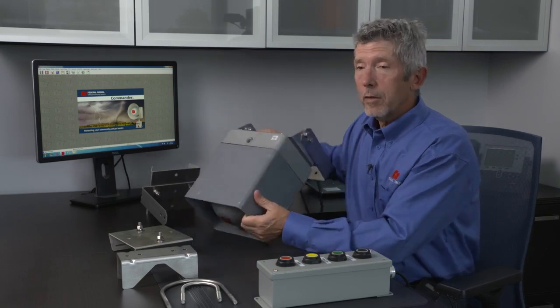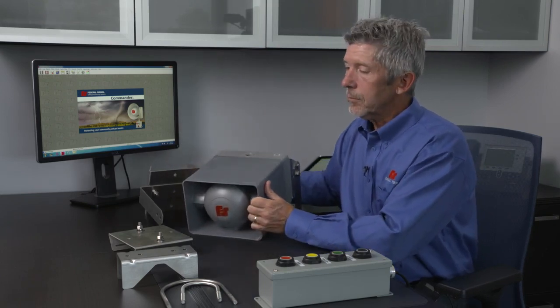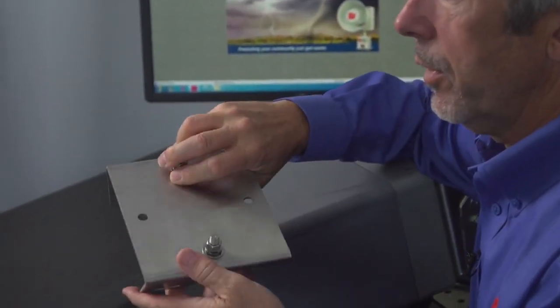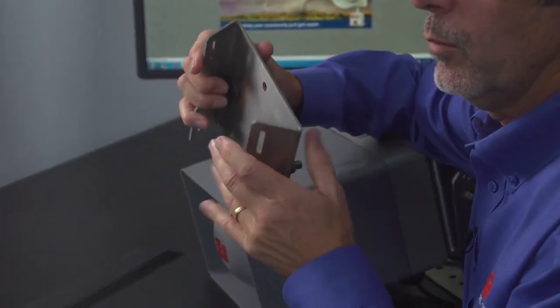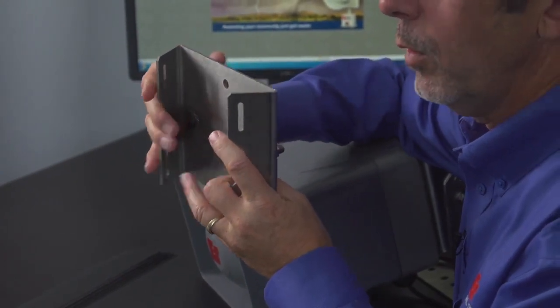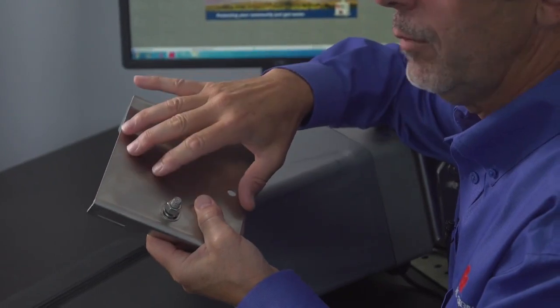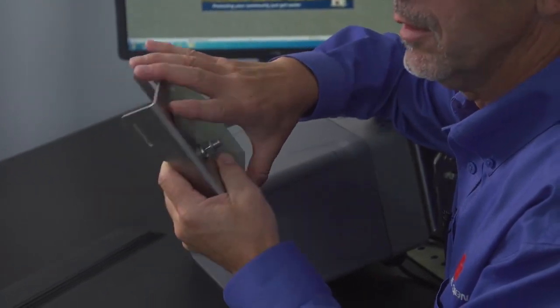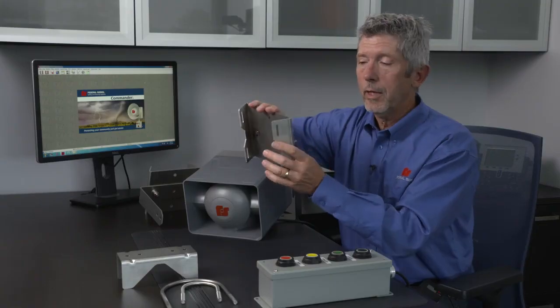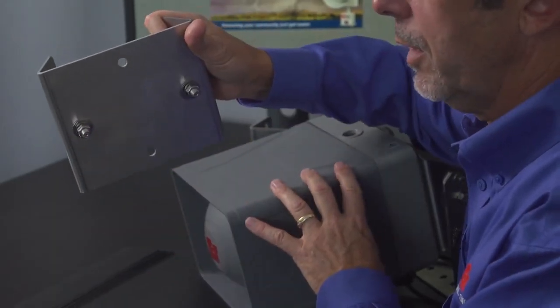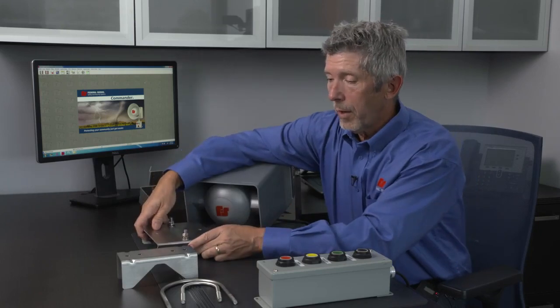We have a couple of other options for the product. Number one, we have a large pole mount bracket. With this bracket you can use it with a large wood pole or a large metal pole using either banding or you can lag bolt the bracket to the pole so that it's secured. And then these hole patterns match up with the bracket that's already included. So that's the large pole mount.